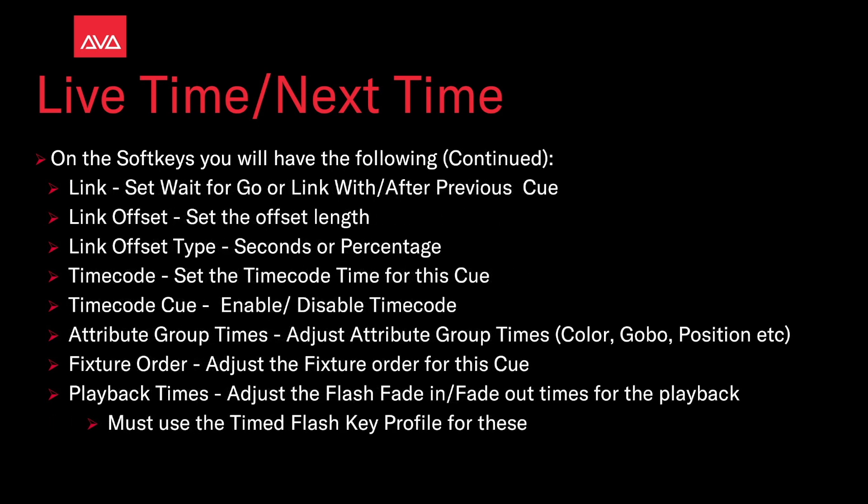Link — set the wait for Go, or link with or after previous queue. Link Offset — set the offset length. Link Offset Type — seconds or percentage. Timecode — set the timecode time for this queue. Timecode Queue — enable or disable the timecode. Attribute Group Times — adjust attribute group times.